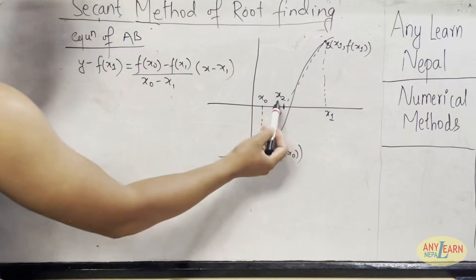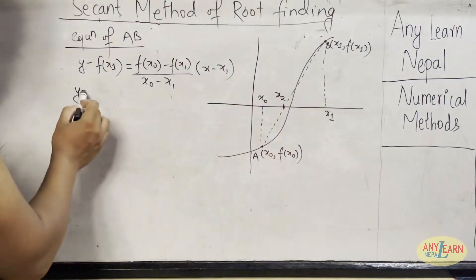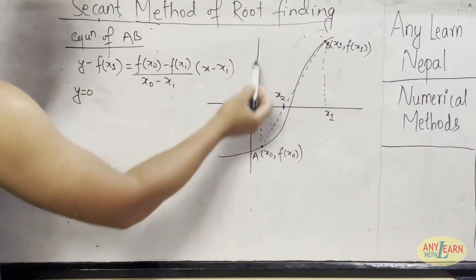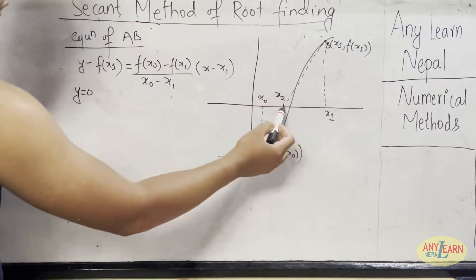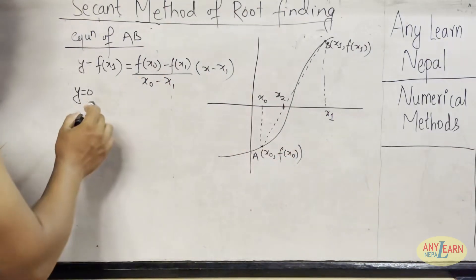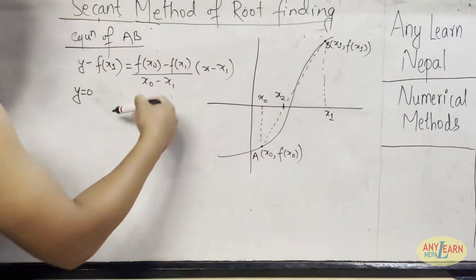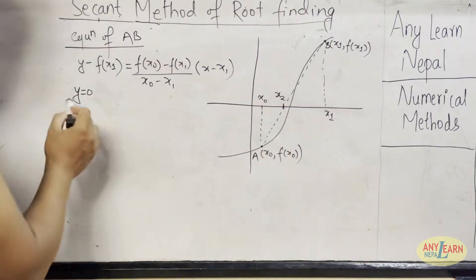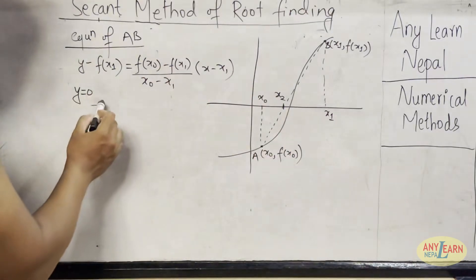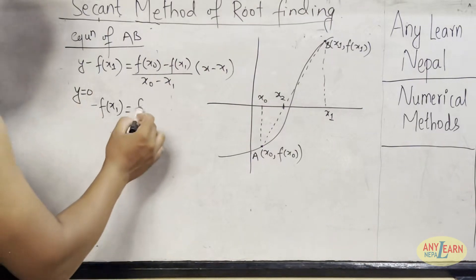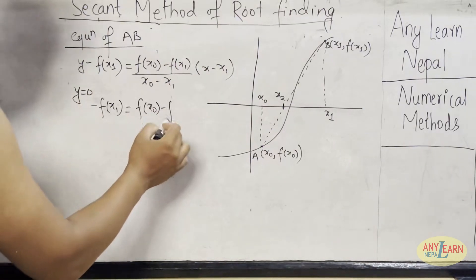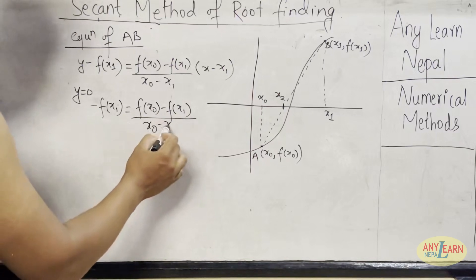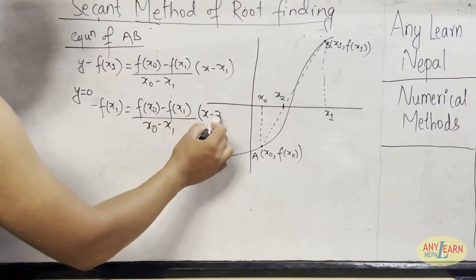Now since AB crosses the x-axis at one point, and that point will be our x2, to get that value of x2 we can put y equals to 0. At this point, the value of y is 0. It has only x-intercept; the y value is 0 on this point. So I can put y equal to 0 and I can calculate the corresponding value of x.